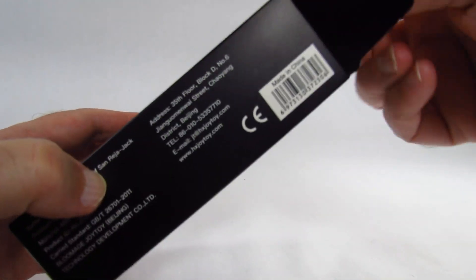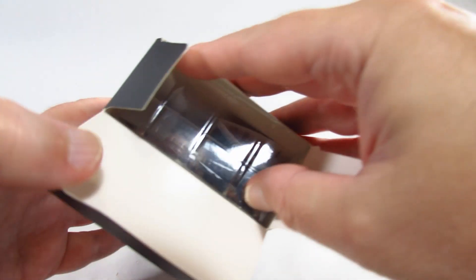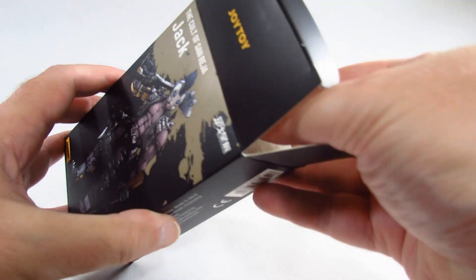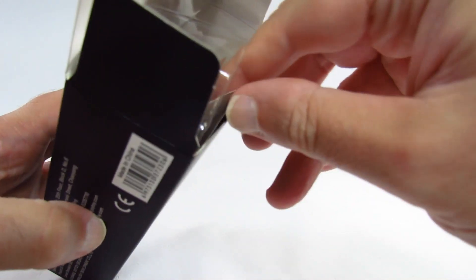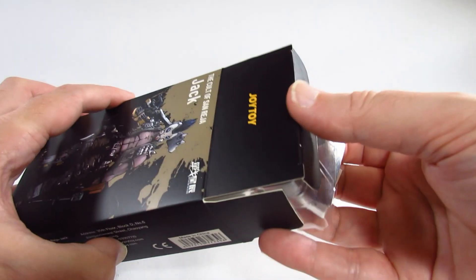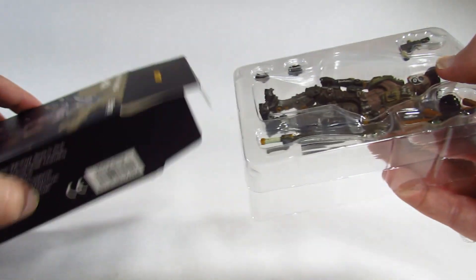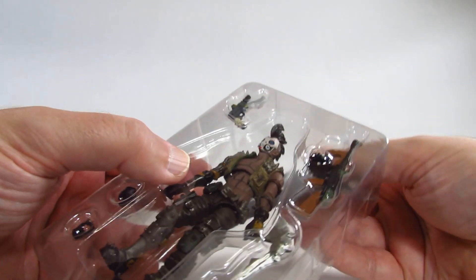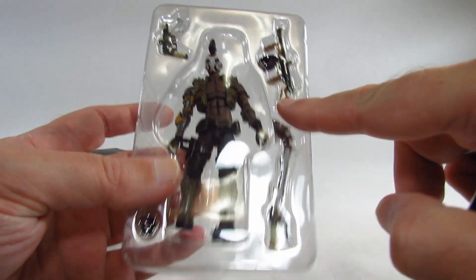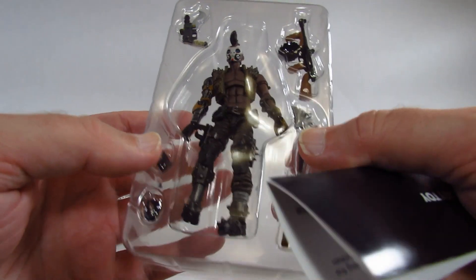And here it does come with some plastic which is good, it provides some protection for the figure. Comes in a plastic tray, two layers to keep all of the accessories in the box.